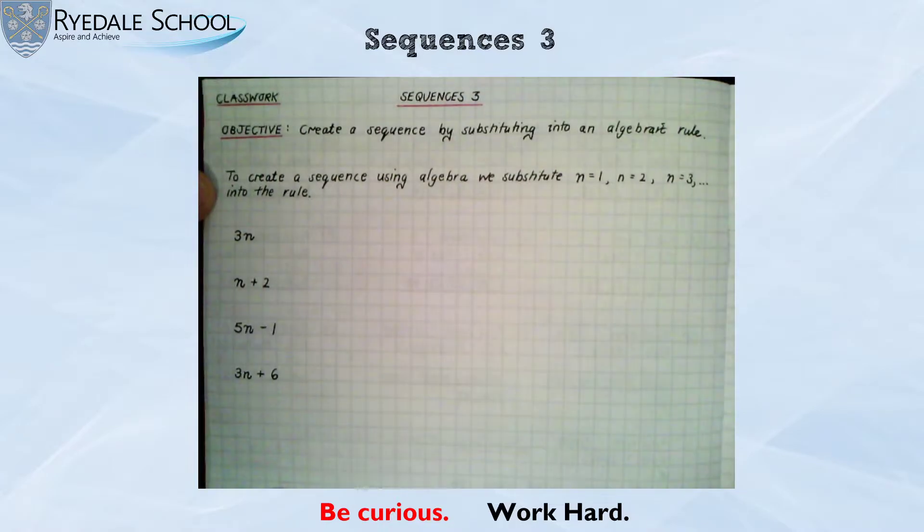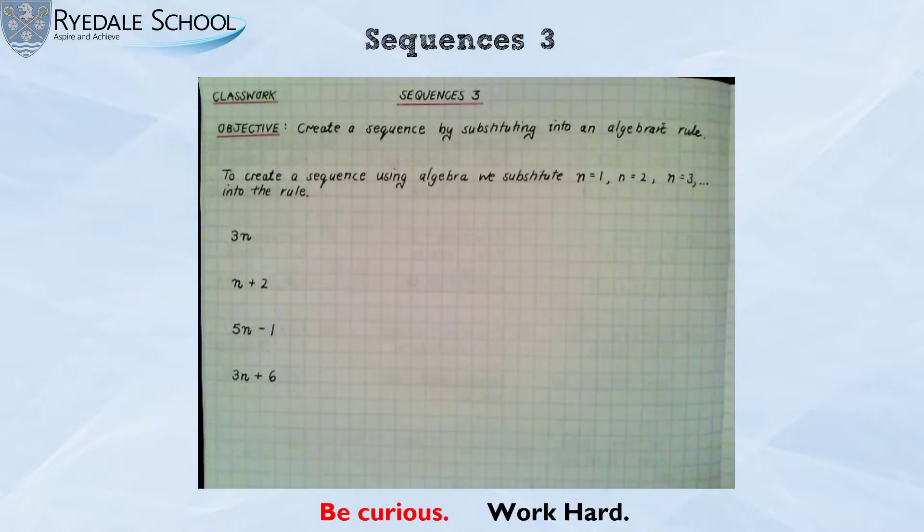So I've written so far to create a sequence using algebra we substitute n equals 1, n equals 2, n equals 3 into the rule. Now we met the idea of substitution when we did some work on algebra and substitution is where you swap the letter for the number. You need to make sure that you understand what the algebra means and I'll talk through that in each of the first of these four examples.